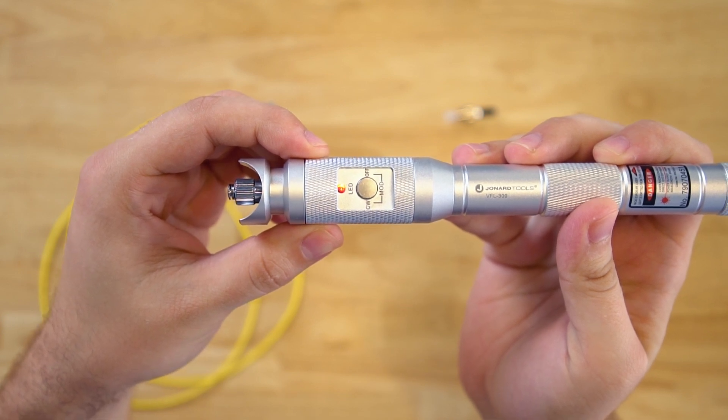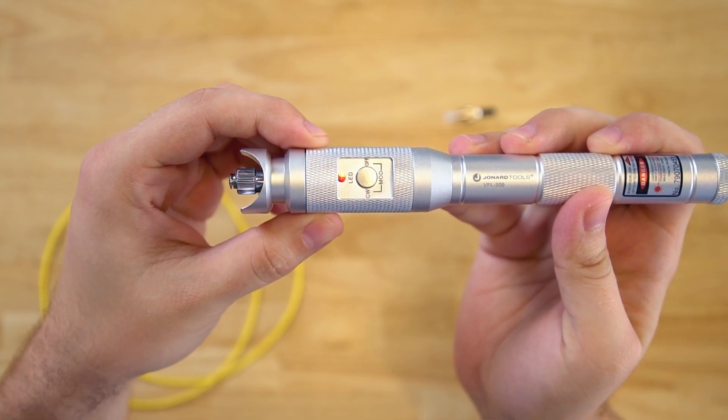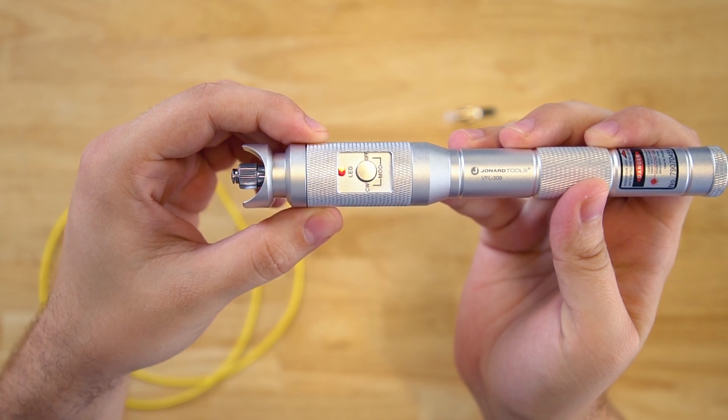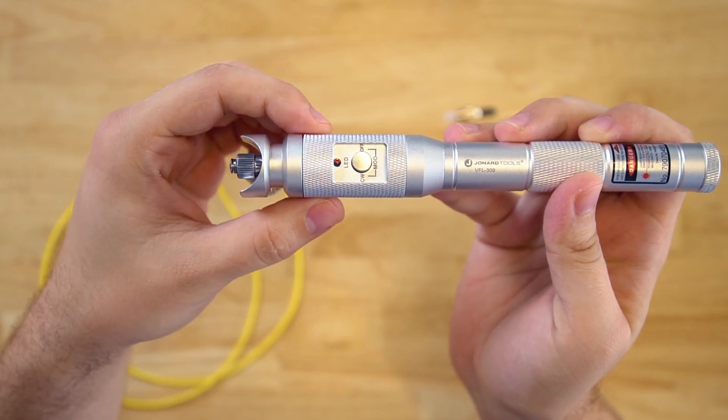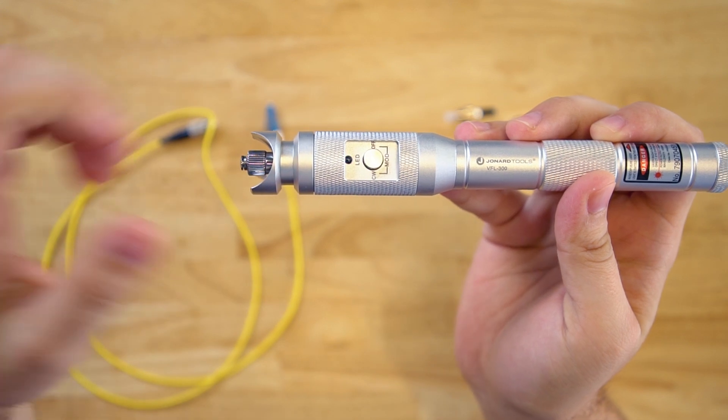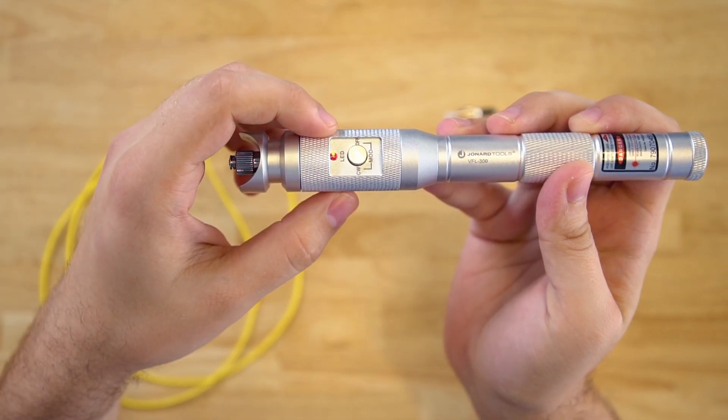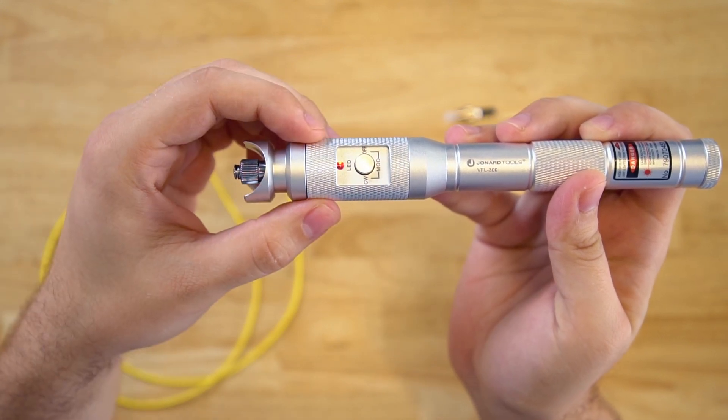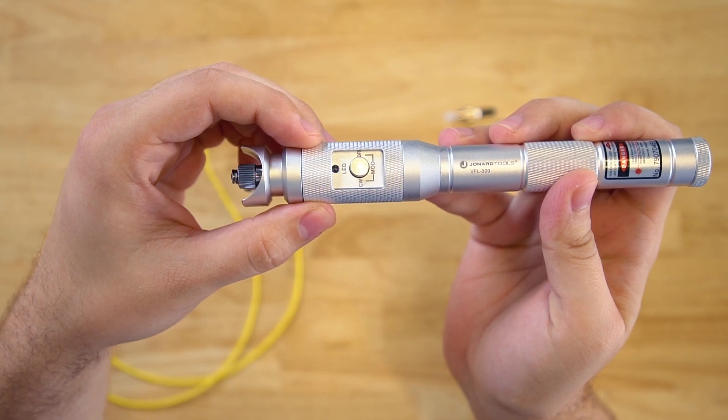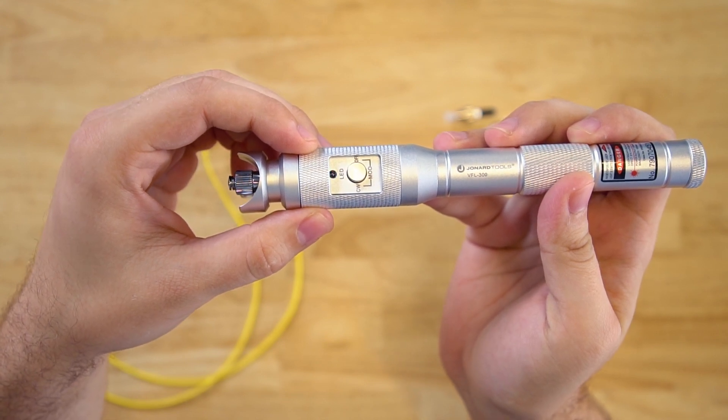The first mode is continuous wave mode, which leaves the laser on at all times. The second button press changes it to pulse mode, which rapidly cycles the laser. The third mode is a slower pulse mode, which also continuously cycles the laser.